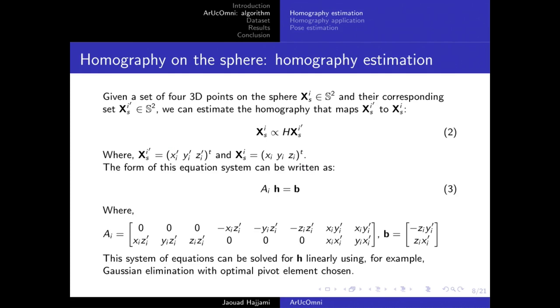Once we've got the spherical coordinates of the corners of both the rectified and acquired marker, Xs and X's, and starting from the fact that homographies are a 3x3 projective transformation defined up to scale factor, we can rewrite the equation as a system A times H equals B, so the system can be solved for H linearly.